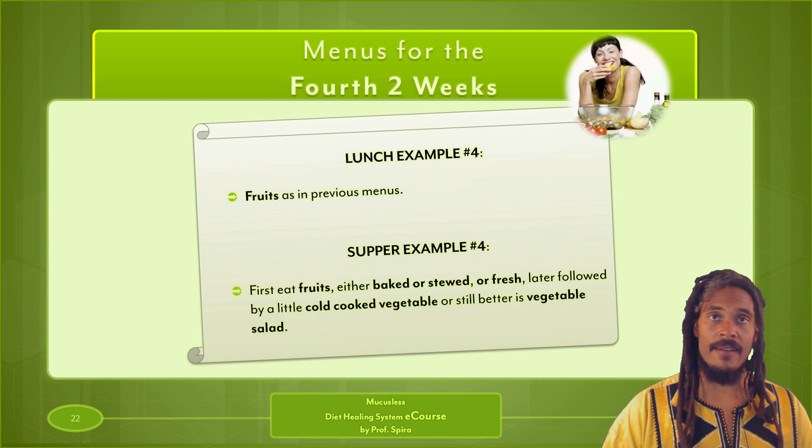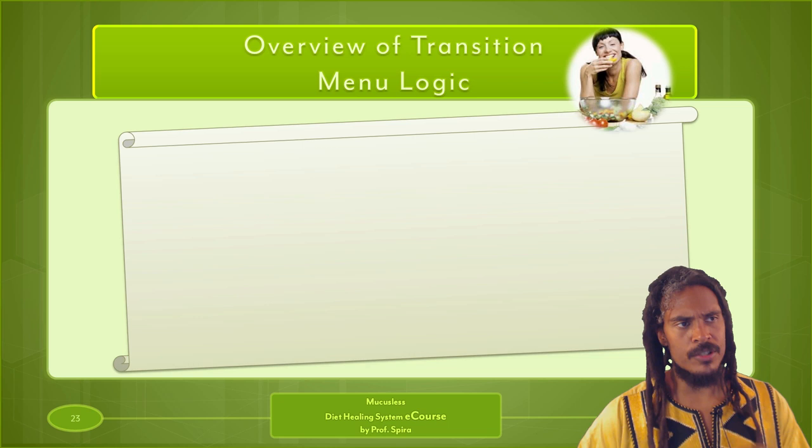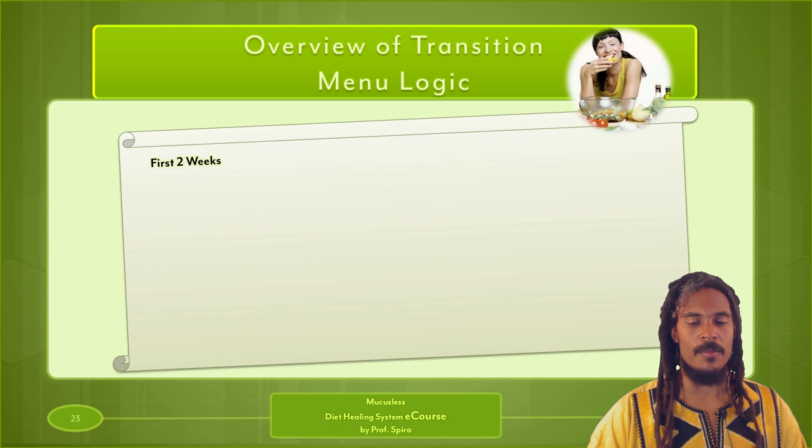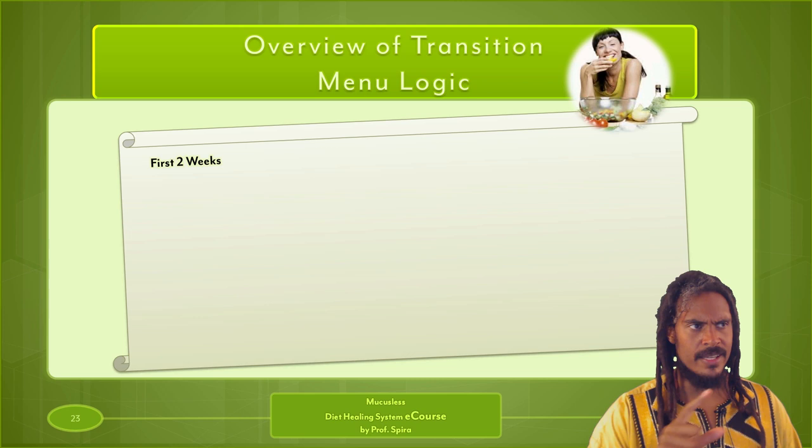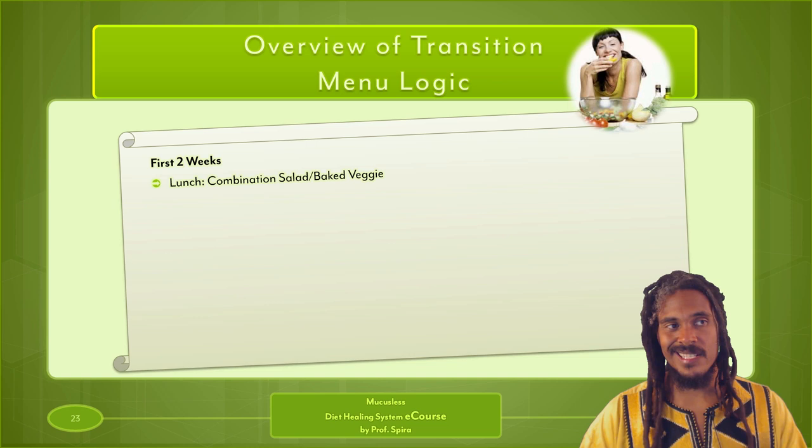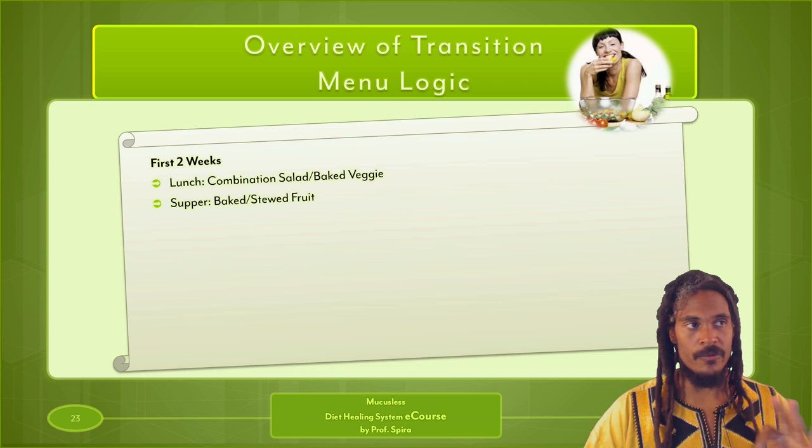Let me give you an overview of what we just went over. When I first read the book I didn't notice how elegant this is. First two weeks: lunch is a combination salad with baked vegetable; supper is baked or stewed fruit. Every day for those first two weeks, that's ultimately what you would do.